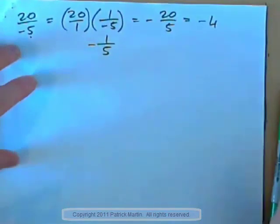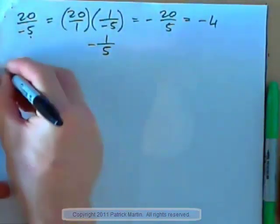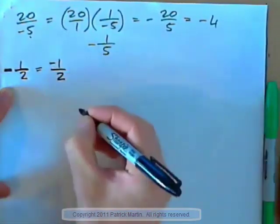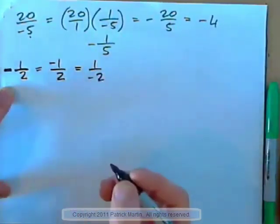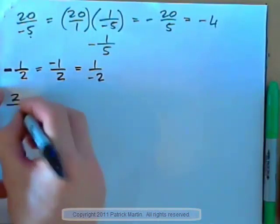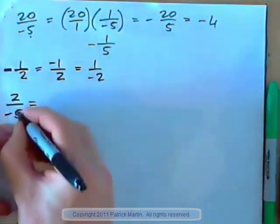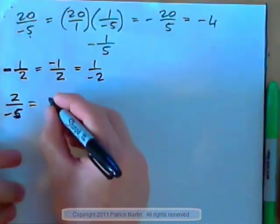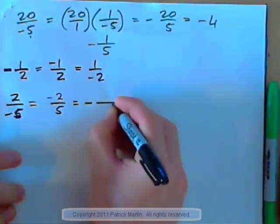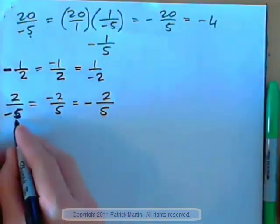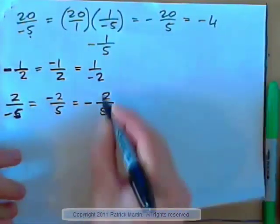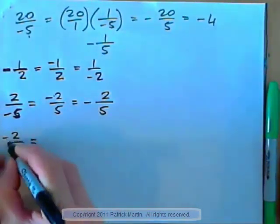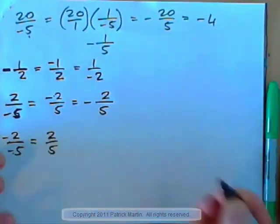What we need to understand — and this is very useful to know — is that negative one-half, with the negative in line with the fraction bar, can also be written as negative 1 over 2, or 1 over negative 2. So if you had, for example, 2 over negative 5, write this two different ways. It can be written negative 2 over 5, or negative two-fifths. So this is 2 divided by negative 5; this is negative 2 divided by 5; and this is negative two-fifths. The negative can be in any one position, but there must be one. If there are two negatives, like negative 2 over negative 5, we know negative divided by negative is positive, so this is actually two-fifths.